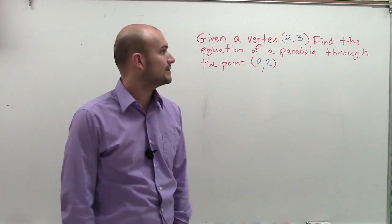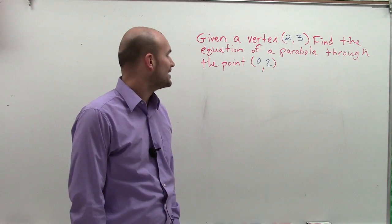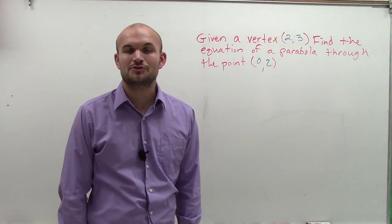Given a vertex (2, 3), find the equation of the parabola through the point (0, 2).